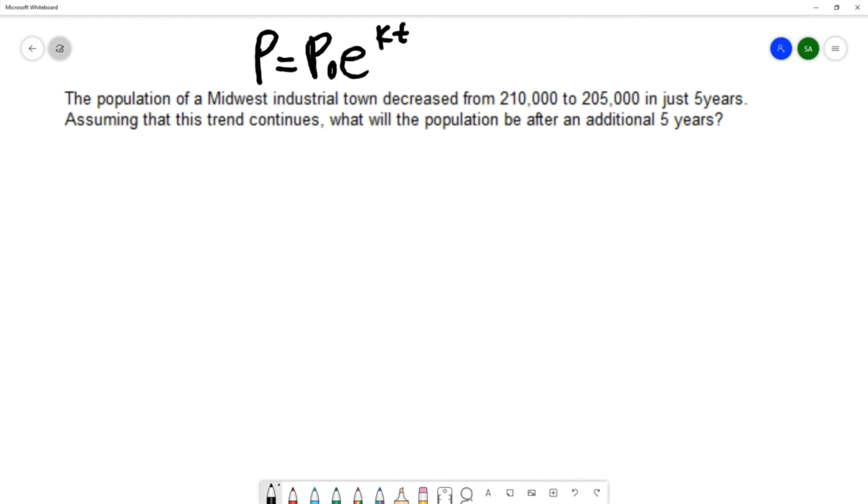P₀ stands for the initial population. K is our decay rate. I've already mentioned that this population is decaying.